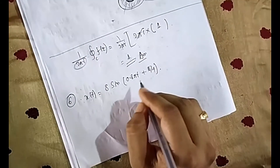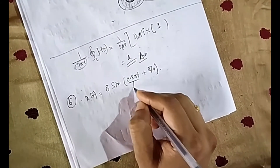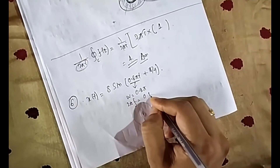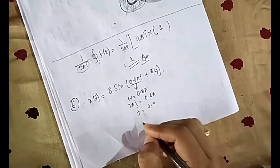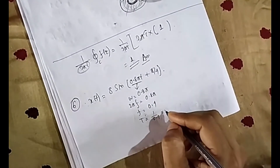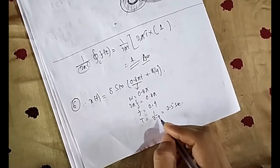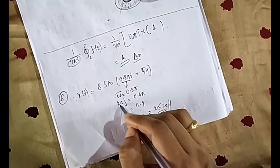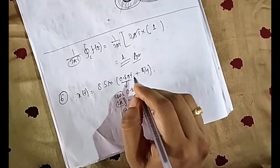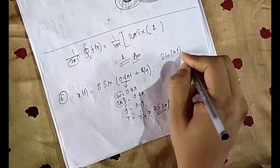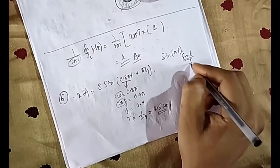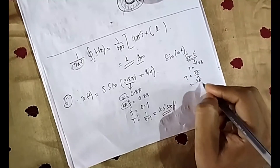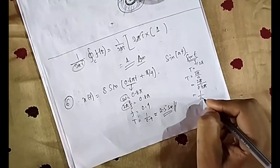For the third question: find the time period of the given signal. From electrical signals, it is sinusoidal with ω = 0.8π. Using ω = 2πf: 0.8π = 2πf, so f = 0.4, and T = 1/0.4 = 2.5 seconds. Alternatively, for sin(at), the time period is 2π/a. So T = 2π / 0.8π = 1/0.4 = 2.5 seconds.